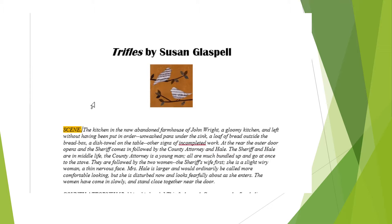Let's read the opening scene together. It says: 'The kitchen in the now abandoned farmhouse of John Wright. A gloomy kitchen and left without having been put in order — unwashed pans under the sink, a loaf of bread outside the bread box, a dish towel on the table, other signs of incompleted work.' The outer door opens and the sheriff comes in followed by the county attorney and Hale. The two women enter slowly and stand close together near the door — the sheriff's wife is slight and wiry with a thin nervous face, while Mrs. Hale is larger but looks fearful as she enters.